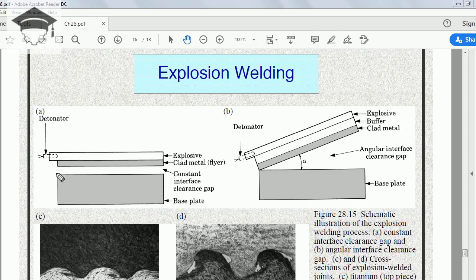There can be two arrangements. The first is shown by Figure A, in which there is a constant clearance gap between the two pieces that have to be welded. This is piece one, this is piece two.